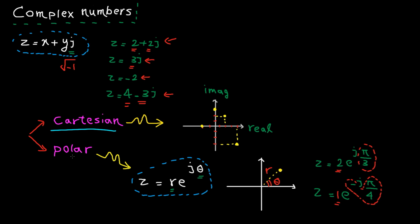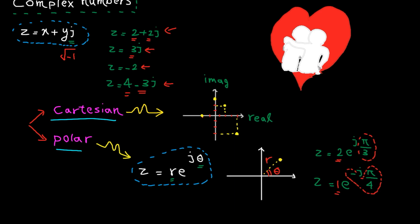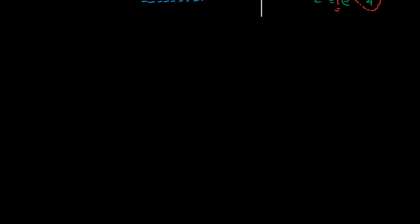Now the question is, what is the relation between Cartesian and polar format? It's obvious that they must be equivalent. There are just two different ways of presenting the same complex number. Let me clarify that.